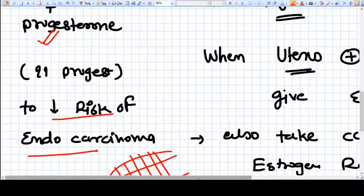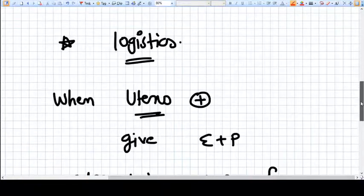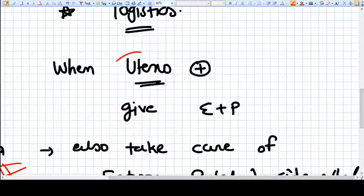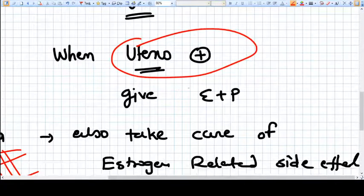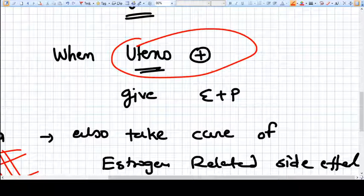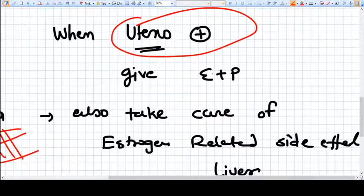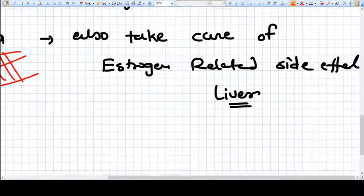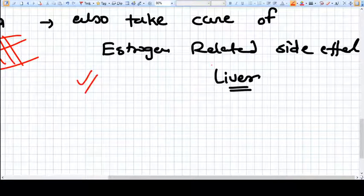There is another thing called logistics. When we have a uterus, we need to give estrogen plus progesterone, and not only estrogen. If the patient had a hysterectomy in the past, so the uterus is not there, then we can only give the estrogen.